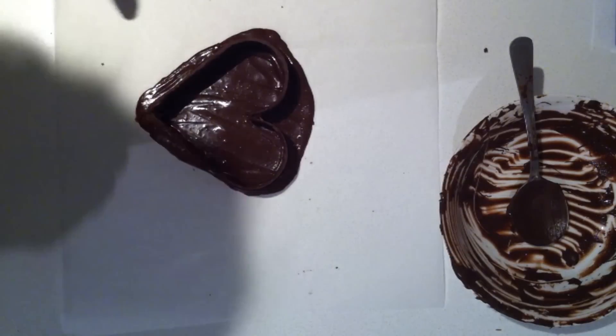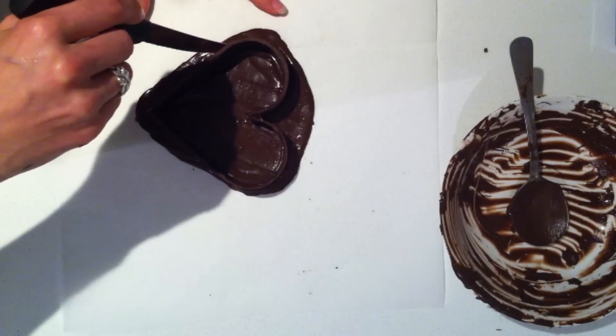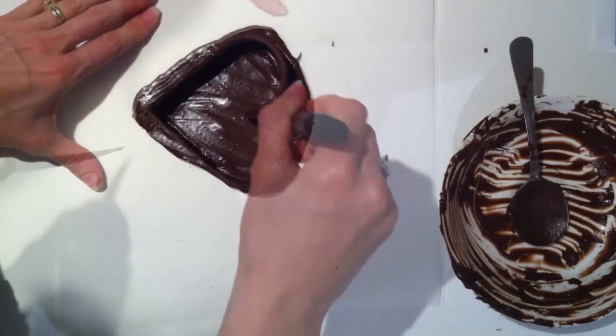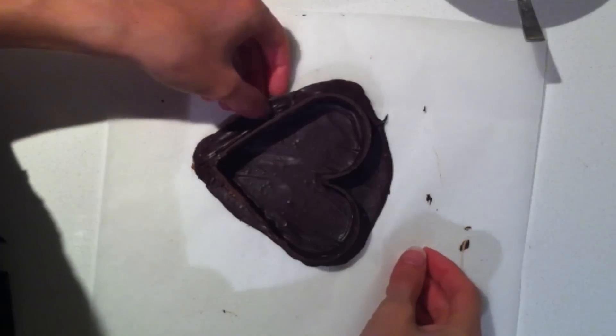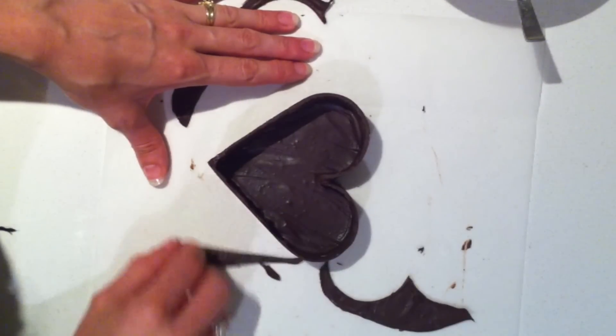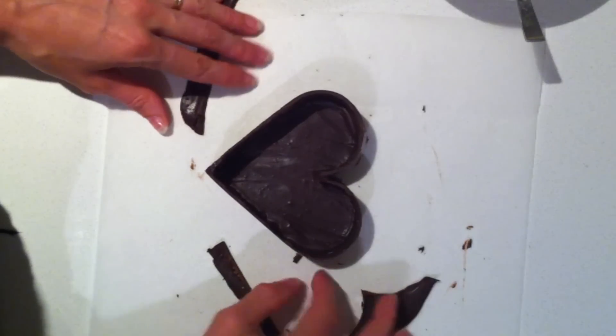What we are going to do is let that chocolate firm up a bit and then run a knife around the edge of the heart shape and then leave it to set completely. Once it is set, you can just carefully move away those pieces of chocolate that are excess on the base.